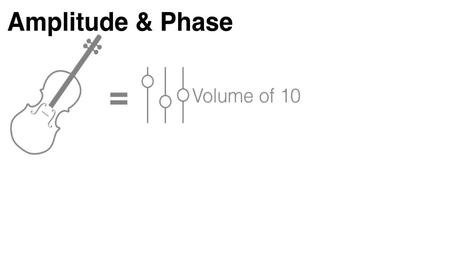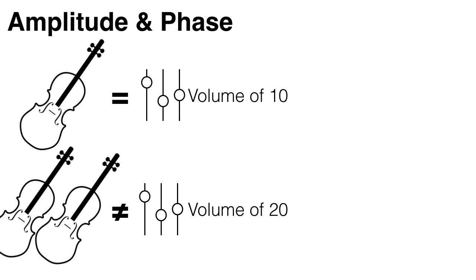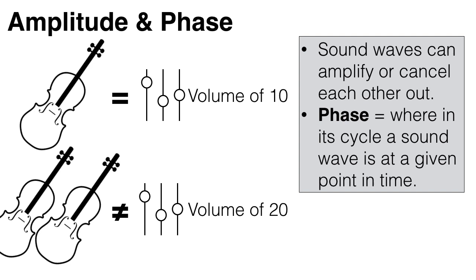Interestingly, the relationship between volume and the number of instruments playing is not one for one. If you double the number of instruments, you do not double the volume of the sound produced — sound waves can amplify or cancel each other out. This is because of how sound waves interact, and is determined by the phase of the sound waves.